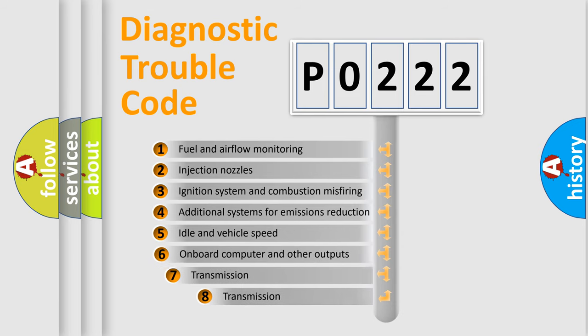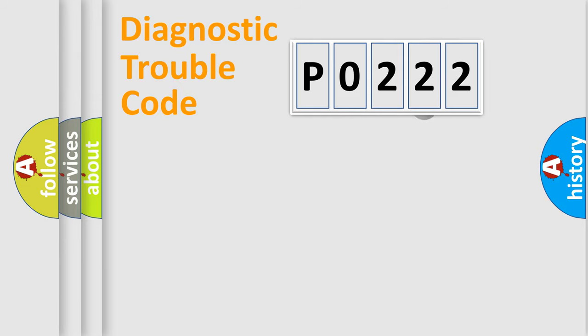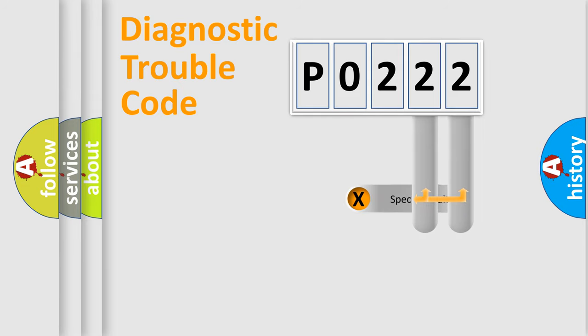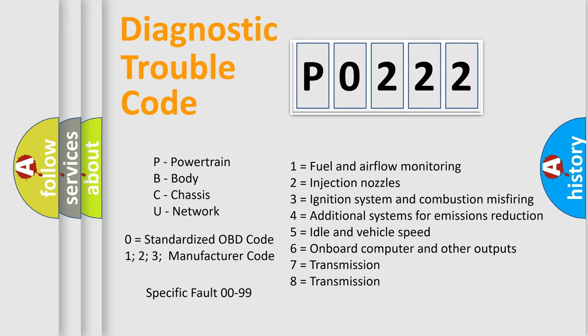The third character specifies a subset of errors. The distribution shown is valid only for the standardized DTC code. Only the last two characters define the specific fault of the group. This division is valid only if the second character code is expressed by the number zero.